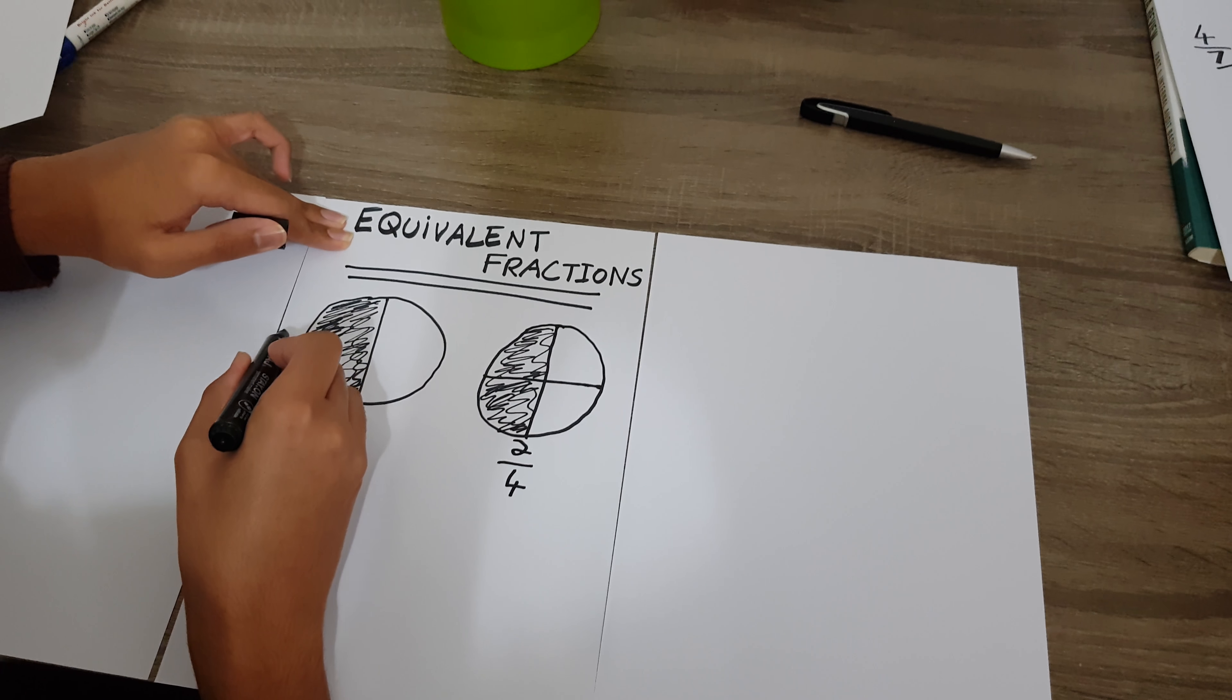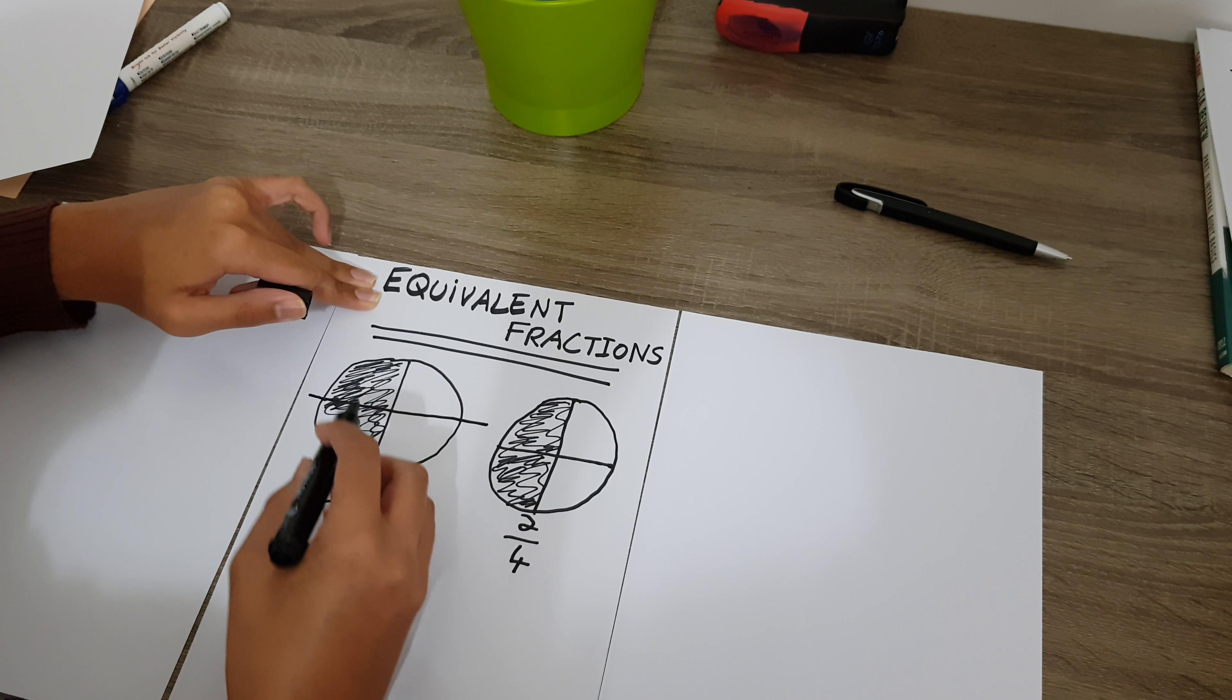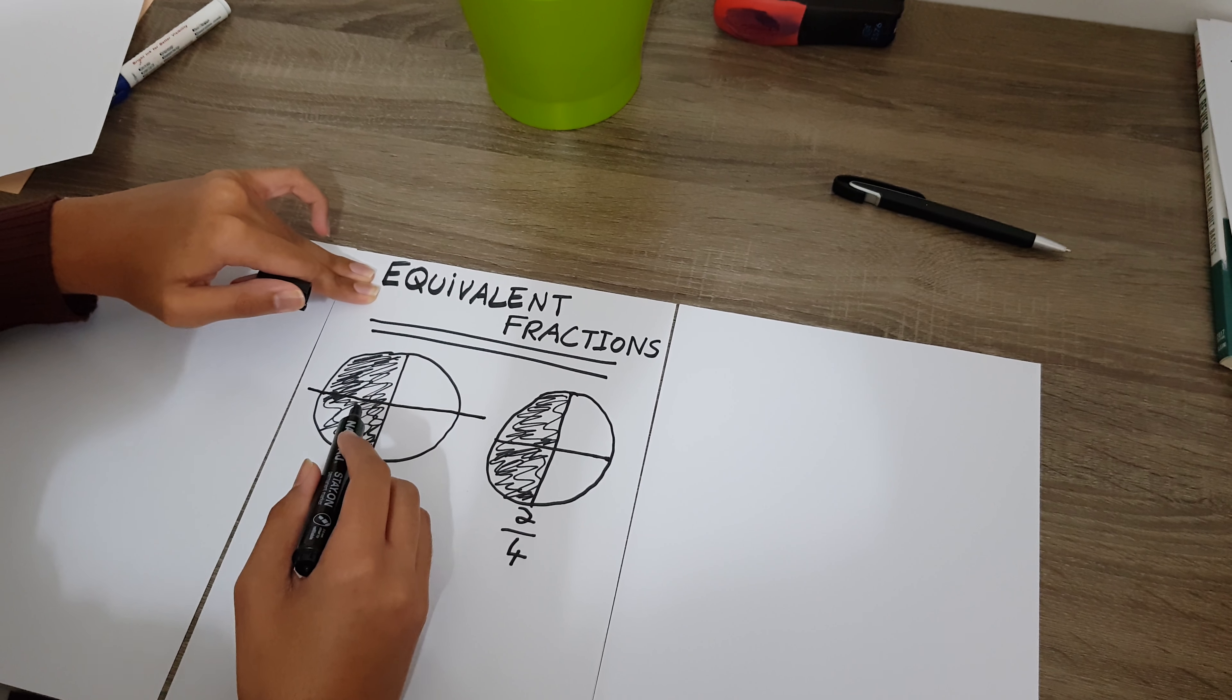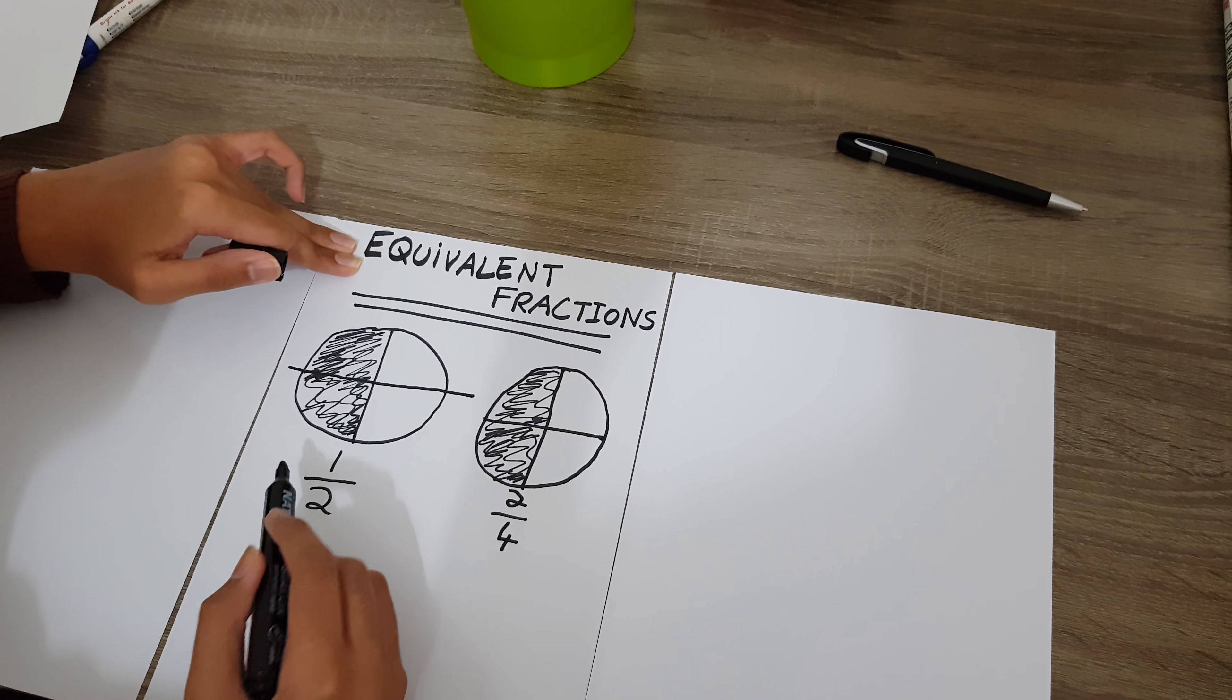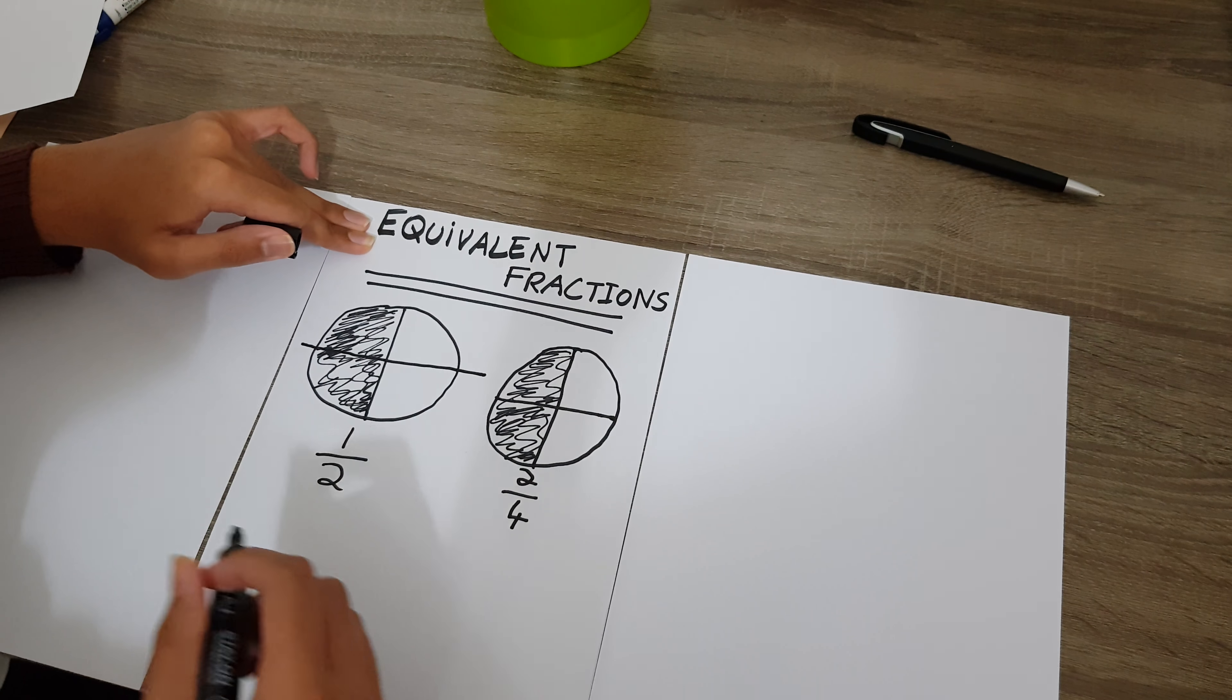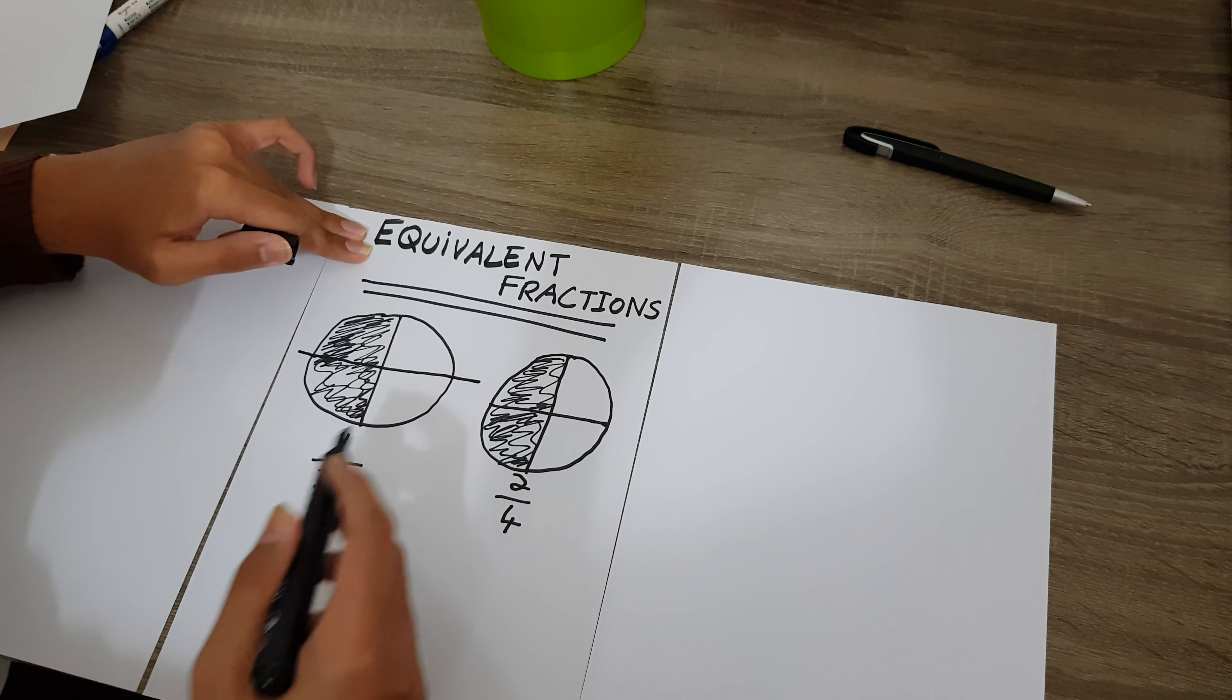Now if you cut this into four pieces, you see, you actually ate two over four slices. This is equivalent fractions. These are the kind of fractions where the numbers are different, but the amount is the same.